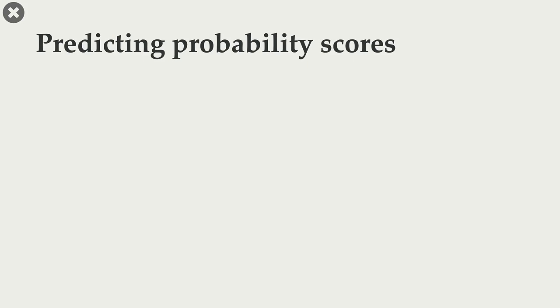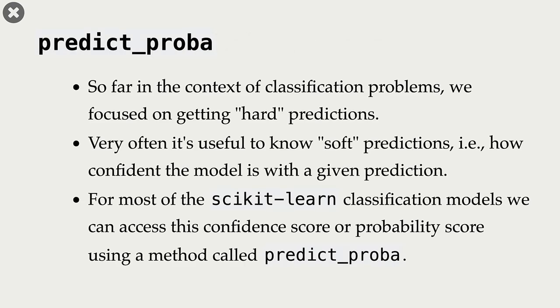So far in the context of classification models, we have been talking about hard predictions. For example, in spam classification, we have been talking about predicting whether a given email or text message is spam or not spam. Very often, it's also useful to know soft predictions, that is how confident our model is with a given prediction.